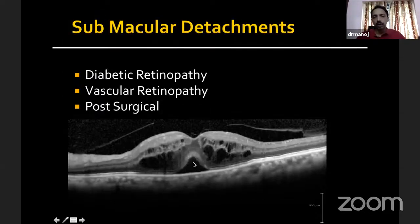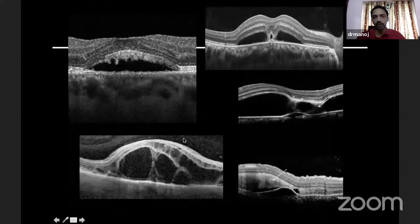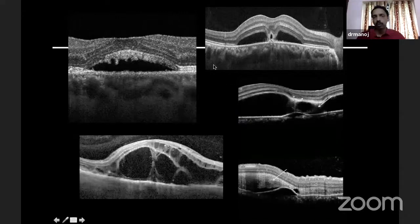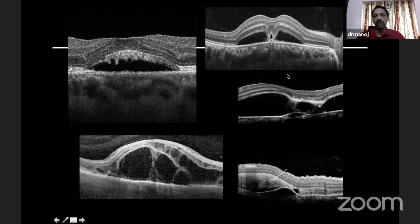When you see fluid under the retina — in the sub-retinal area, between the retinal pigment epithelium and the neurosensory retina — this is called sub-retinal fluid or sub-macular detachment. This is commonly seen in vascular pathologies and also in post-surgical situations. A common example is central serous retinopathy, where you have this sub-retinal fluid along with certain signs — elongation of the photoreceptors, fibrin deposits within the sub-retinal fluid, and a vacuole sign described along with the fibrin deposits. These signs help you make a diagnosis of central serous retinopathy.